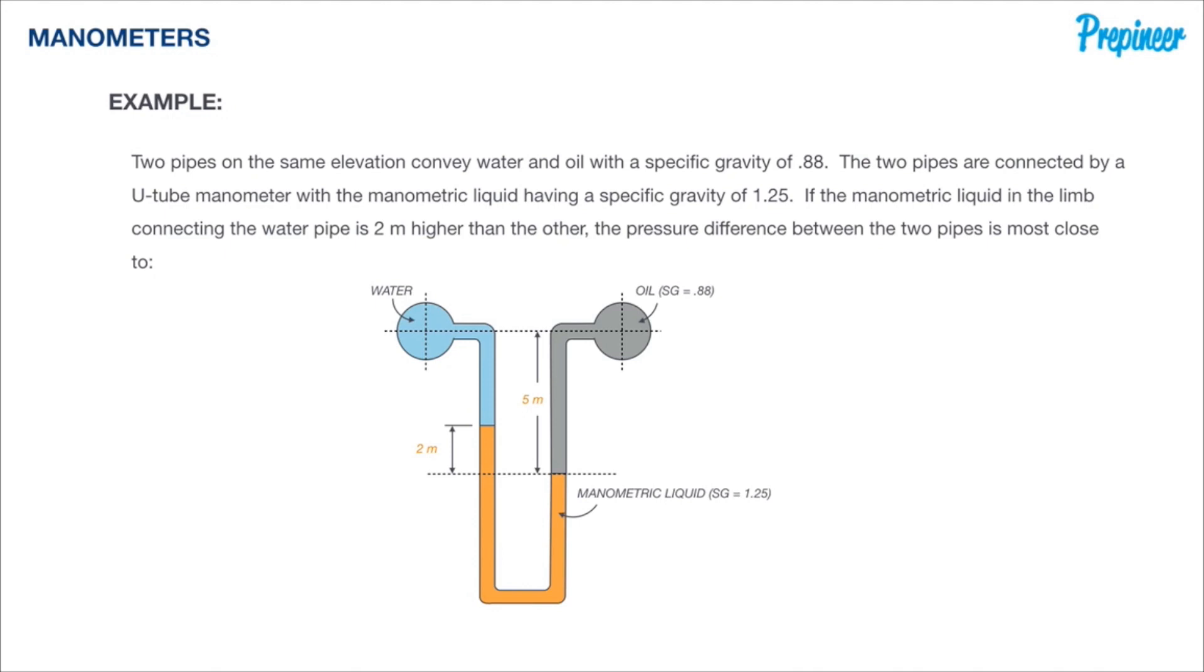As you can see the blue color represents the water and the gray represents the oil while the orange color represents the manometric liquid that is being used inside our manometer. We are given various information about the working fluids along with different measurements that will help us determine ultimately what the pressure difference is between the two pipes.